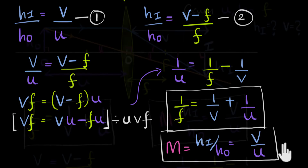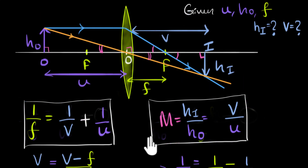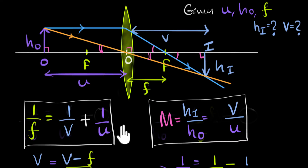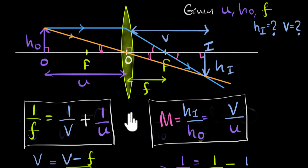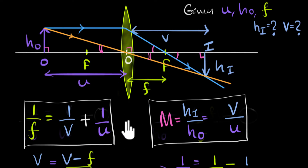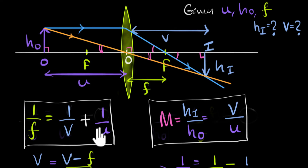Since we derived this equation for a specific case — a convex lens with a real image — these equations may not be general. They may not work for virtual images or a concave lens. The answer is sign conventions. If we treat these distances as positions on a graph and write the equations with signs, they become a general formula. We use the same Cartesian sign conventions to generalize them.